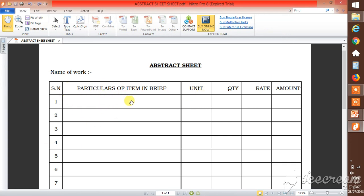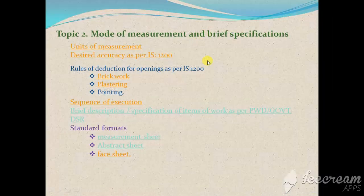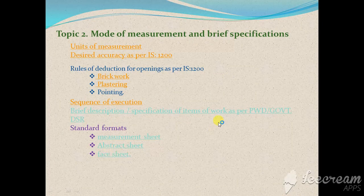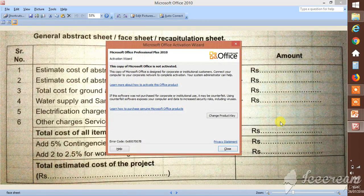We are going to get particulars of the item, unit in which it is being calculated. The quantity is getting calculated or getting from the abstract sheet. The rate from the DSR for this item, and the amount is getting calculated by quantity multiplied by rate. And the last one, this is the face sheet in which all the details we are going to put.